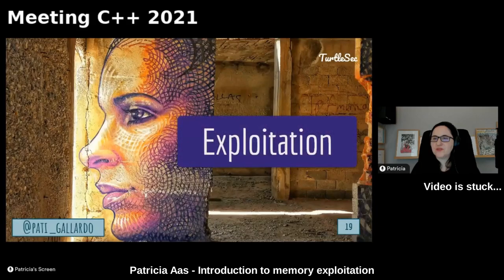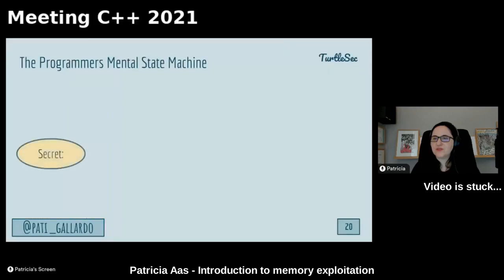Very often you will see professional security researchers specialize — some are specialized in finding bugs and some in exploiting bugs. I want to talk about a model for thinking about exploitation called the weird machine. But first I have to present the underlying idea: you as a programmer have a mental model for how your program is supposed to work.